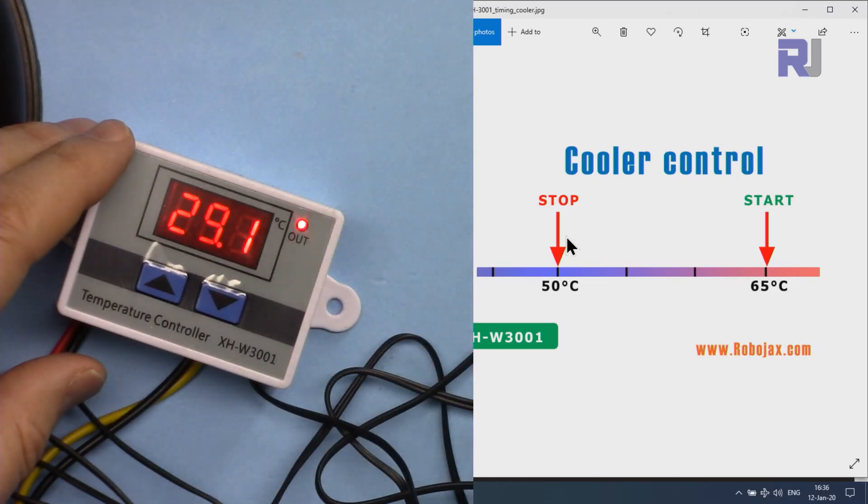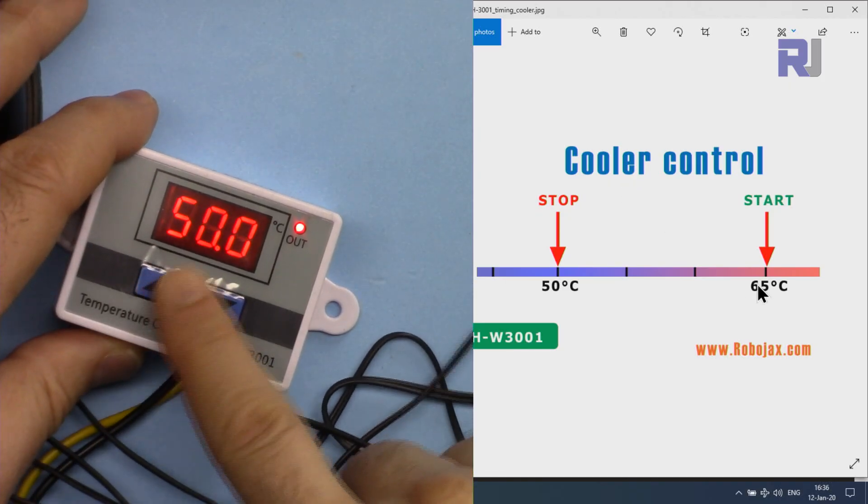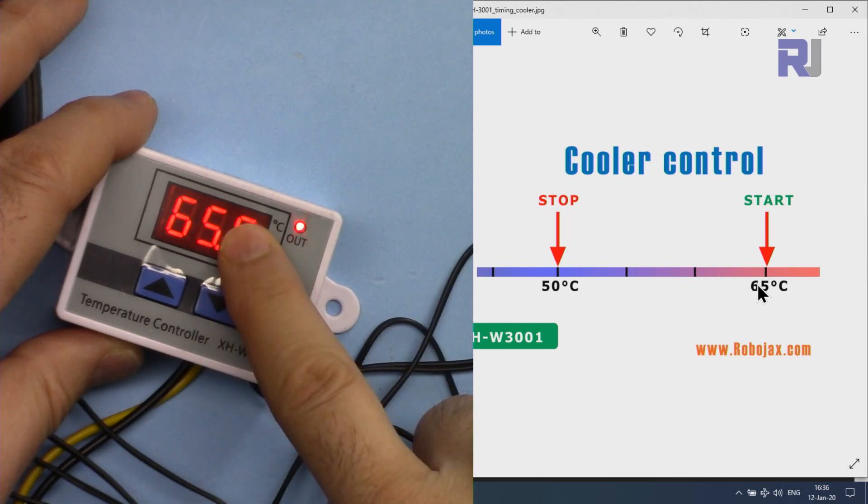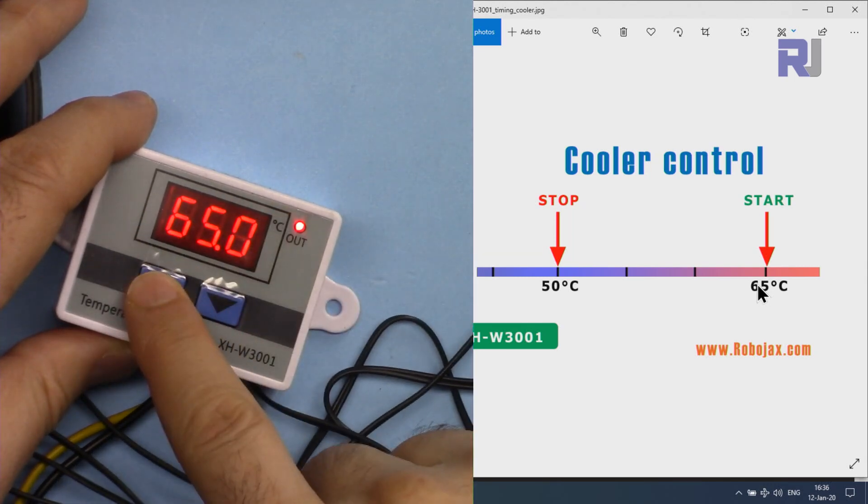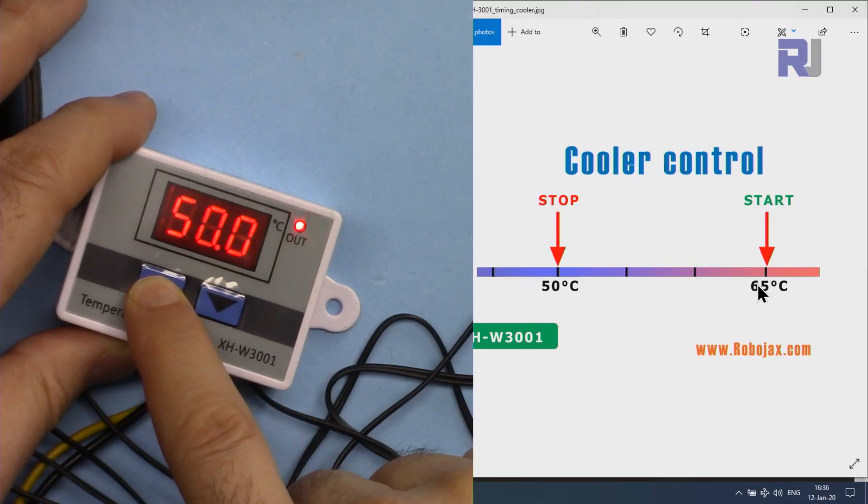Now we are using it as a cooler. Start is now 65 and stop has changed. When the start is higher than stop, because it's a cooler, the start is now 65. So let me press this - this is start. Press this - that's stop. We have to switch it. When I press this start, let me increase it to 65.